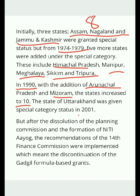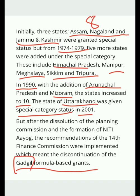In 1990, with the addition of Arunachal Pradesh and Mizoram, the number of special category states increased to ten. Later in 2001, Uttarakhand was also given Special Category Status. After that, the dissolution of the Planning Commission and the formation of NITI Aayog meant the recommendations of the 14th Finance Commission were implemented, leading to the discontinuation of Gadgil formula-based grants.